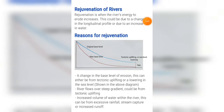The first reason for rejuvenation is a change in base level of erosion. This can either be from tectonic uplifting or a lowering in sea level. As you can see in the diagram, the original base level is the blue line, but something occurred — either tectonic uplifting or a lowering in sea level — which has caused a new base level to occur.